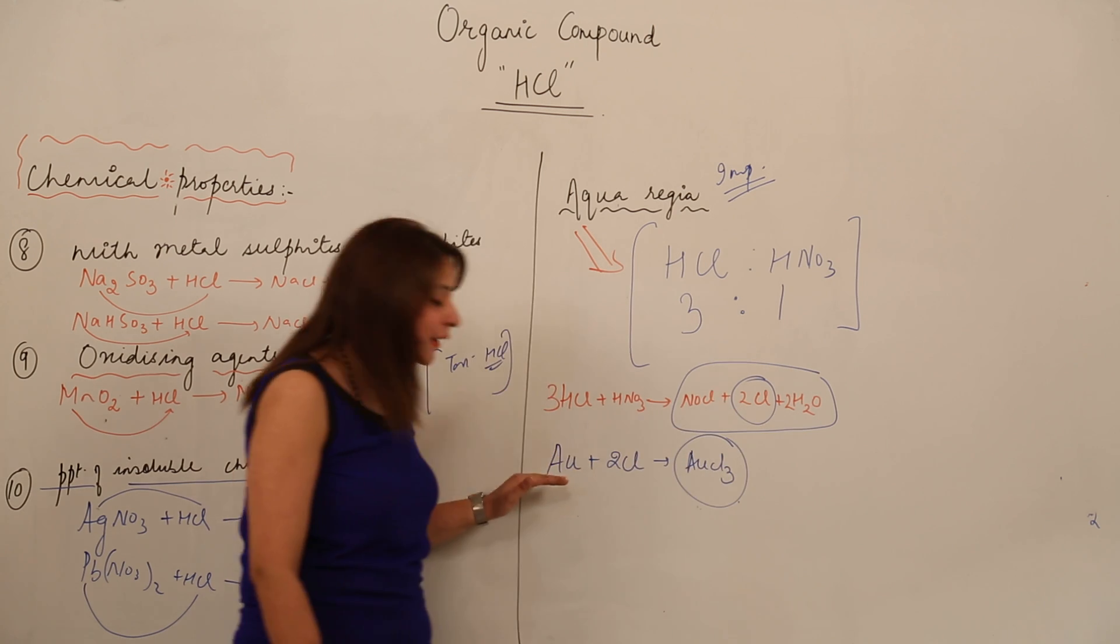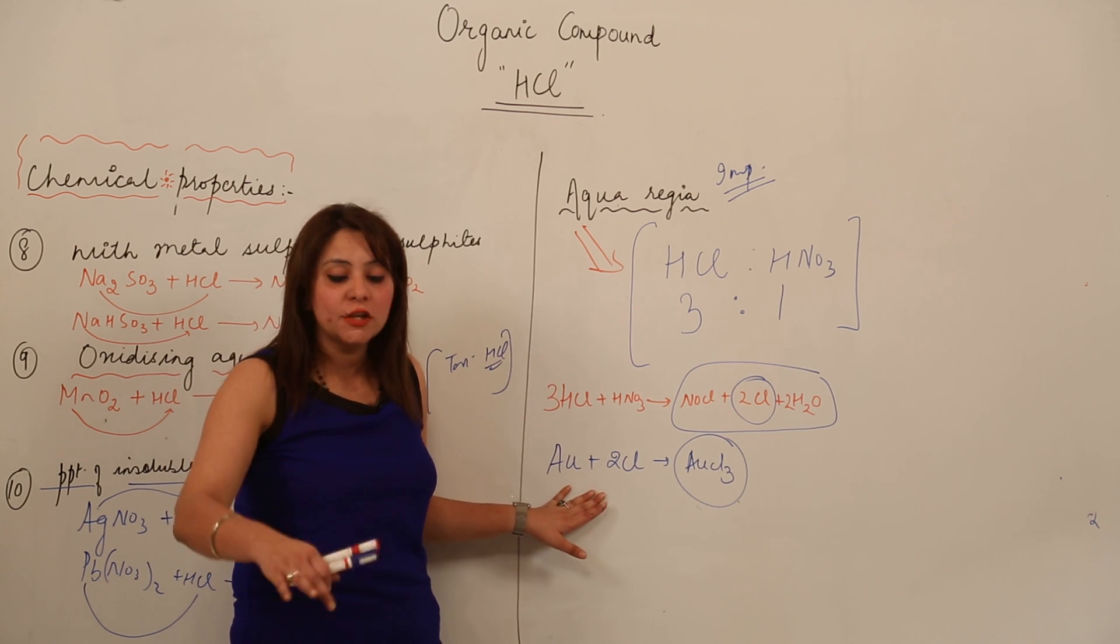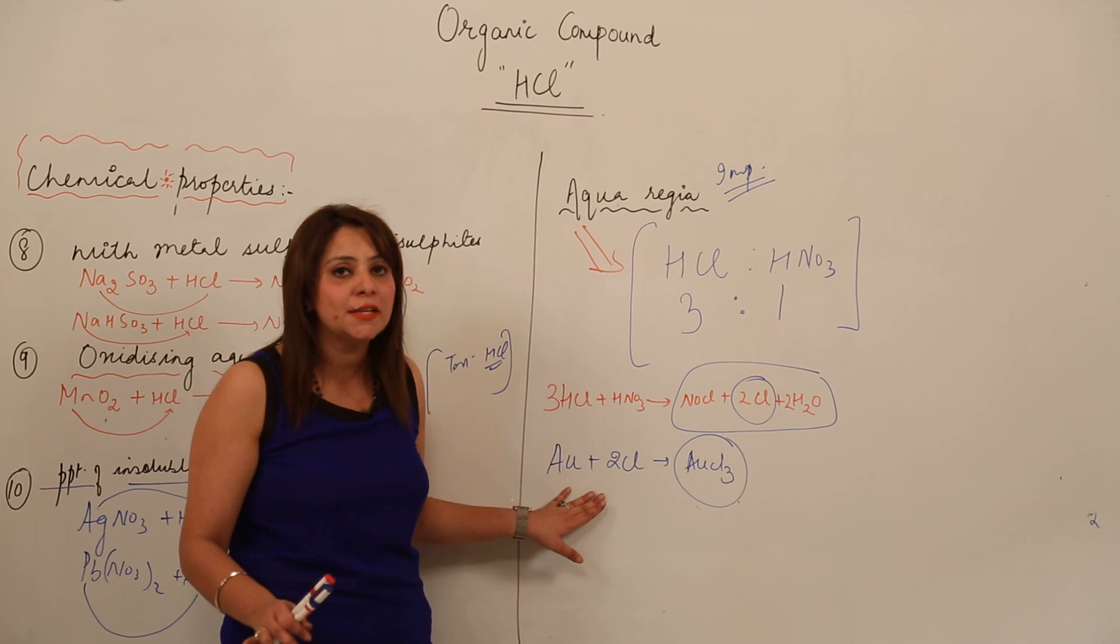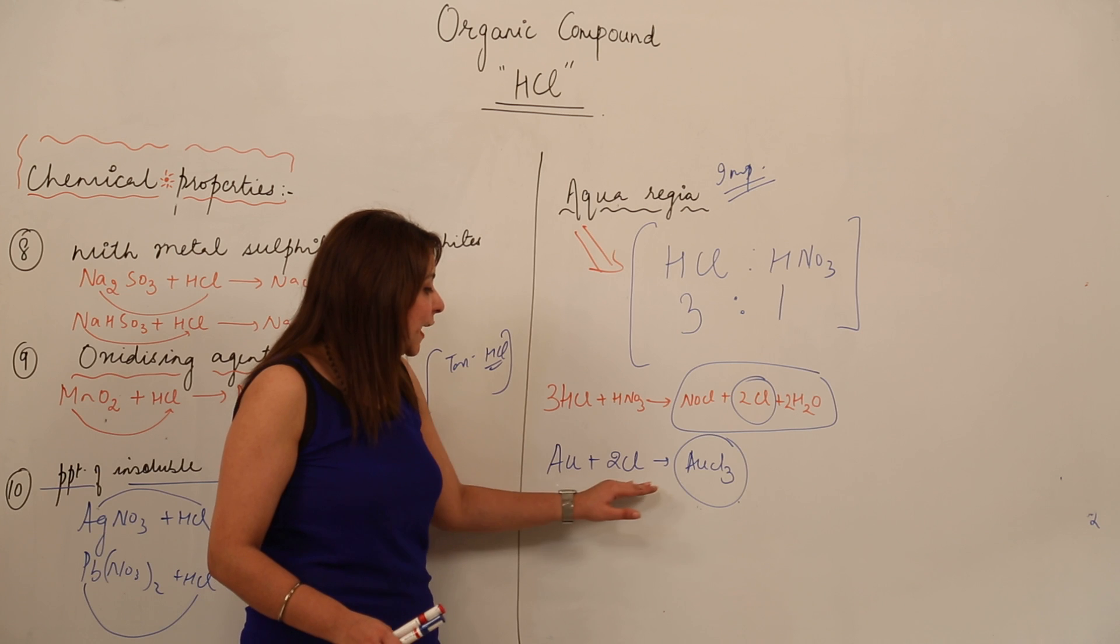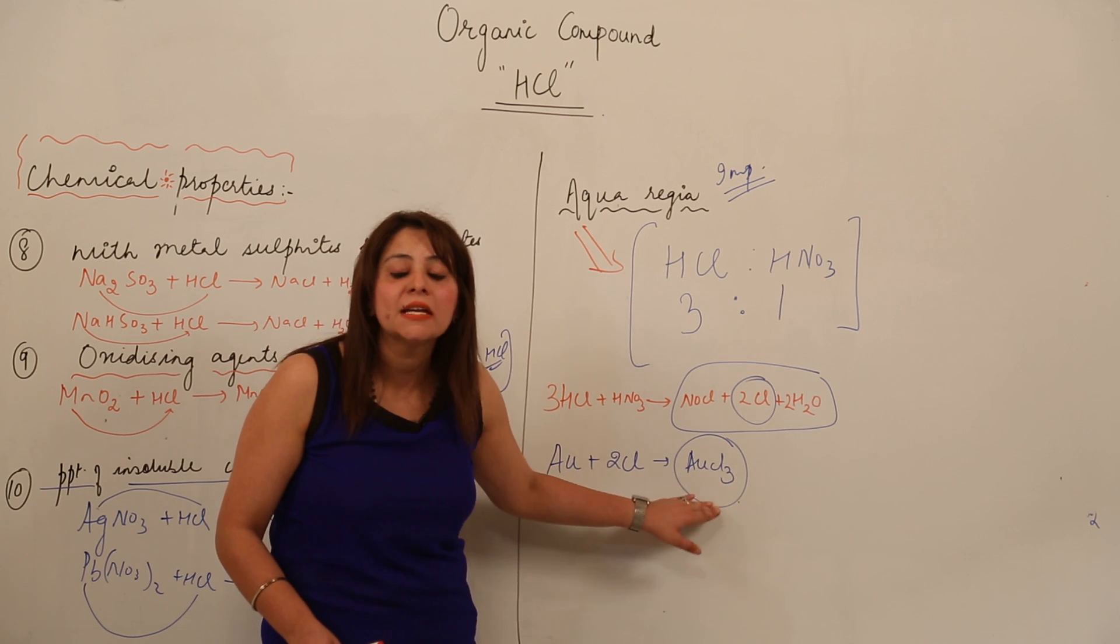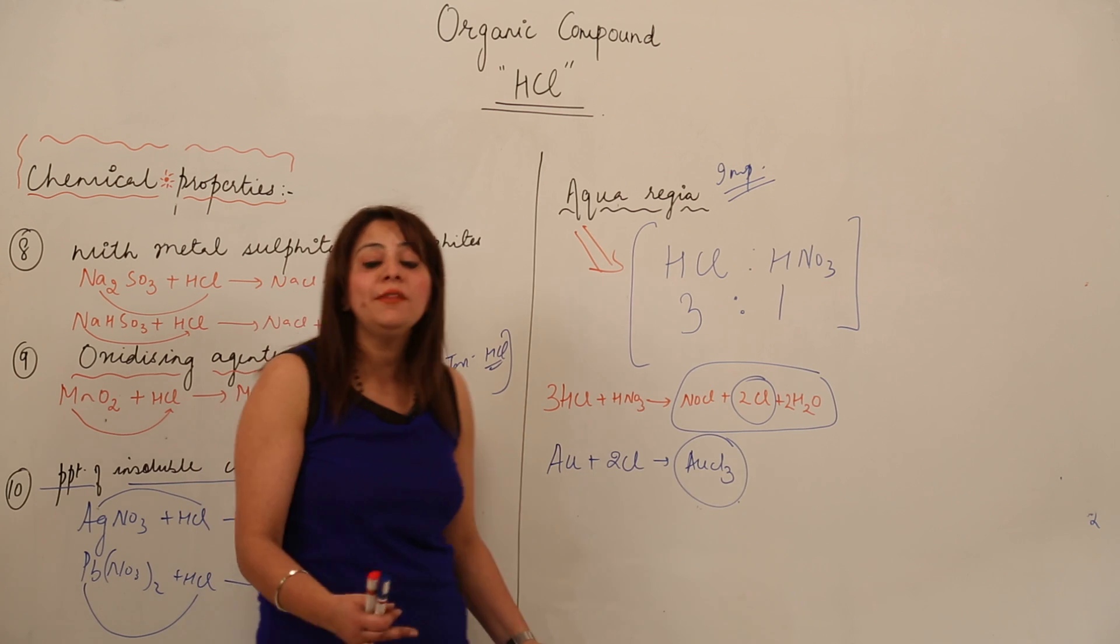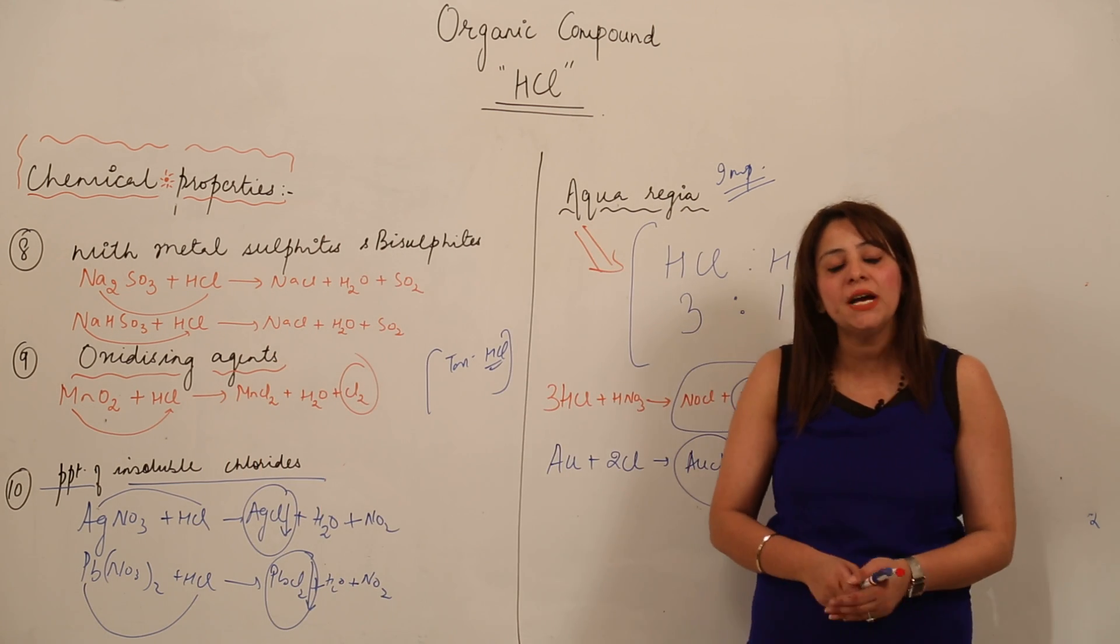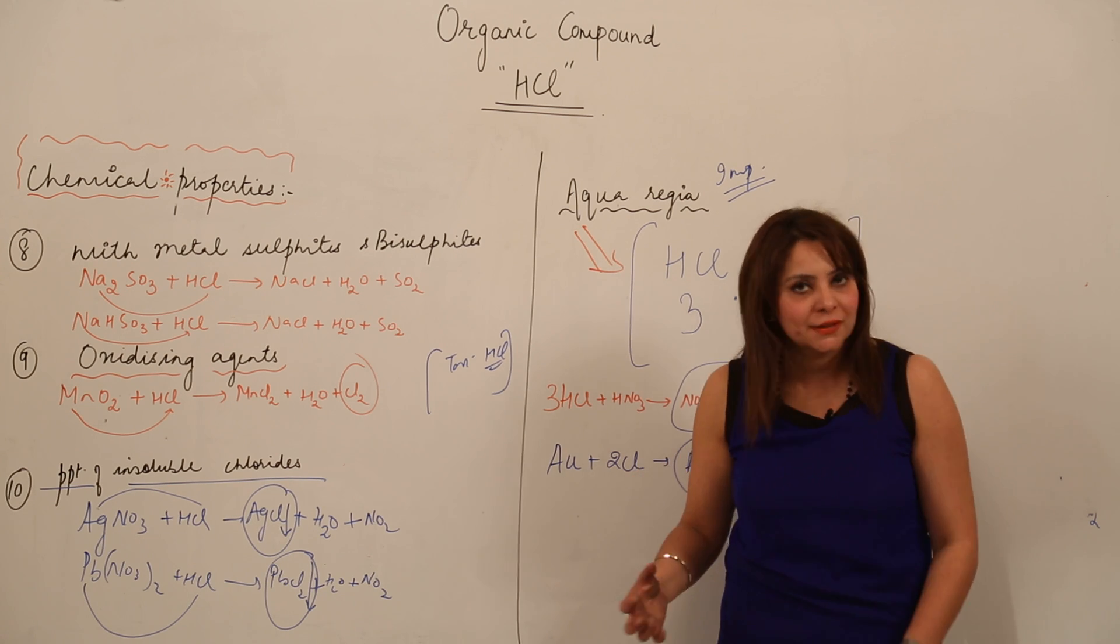As I showed, we took gold as an example. Gold falls at the bottom in the reactivity series - it's one of the least reactive metals. When it reacts with this, it gets dissolved, leading to formation of its chloride. It dissolves noble metals also. This is the use of aqua regia - it's capable of dissolving even noble metals.